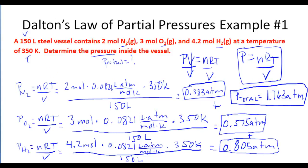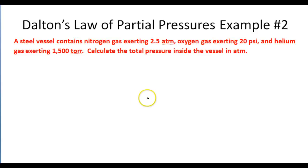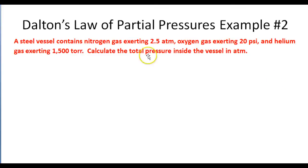Let's take a look at another example. A steel vessel contains nitrogen gas exerting 2.5 atmospheres of pressure, oxygen gas exerting 20 psi, and helium gas exerting 1,500 torr. We want to calculate the total pressure inside the vessel in atmospheres. The pressures of each gas are already given, but each has a different unit.